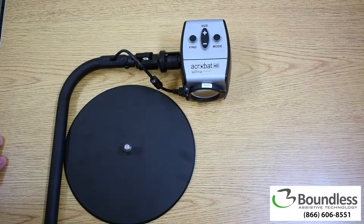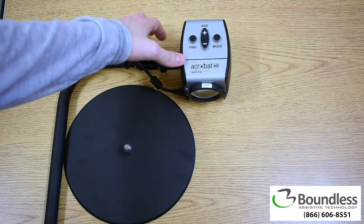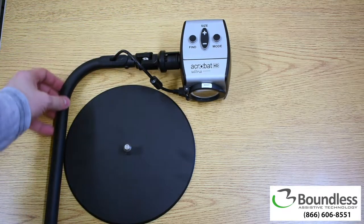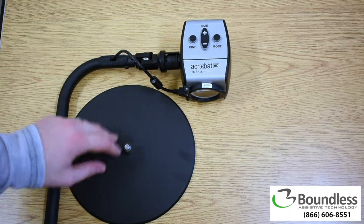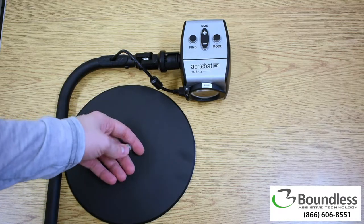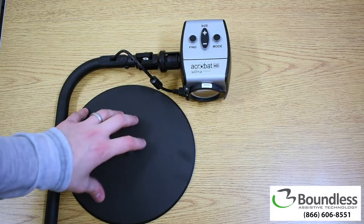Boundless AT is proud to show you the Acrobat HD Ultra short arm from Enhanced Vision. This is a wonderful camera attached to a very sturdy arm that connects to this heavy metal base. This ensures that the camera is ready to go for low vision applications.